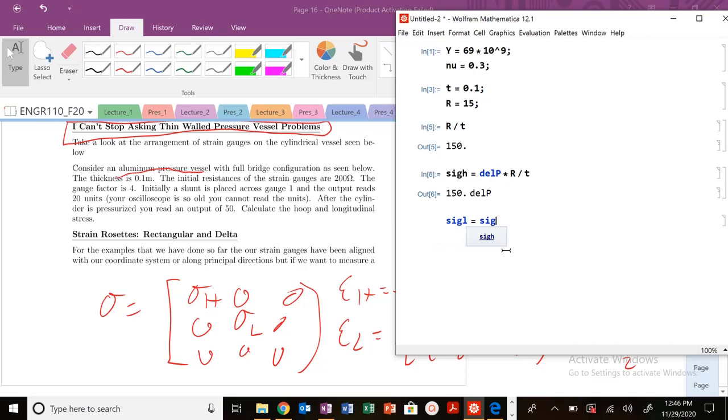Sig H is equal to ΔP times R divided by T. I know that my sig L is equal to sig H divided by 2, not 3. And those are just some of the values.